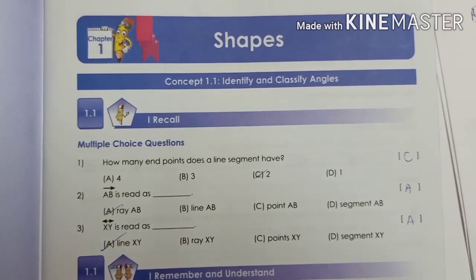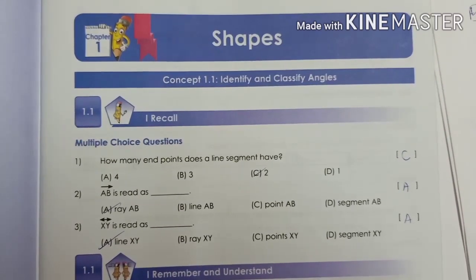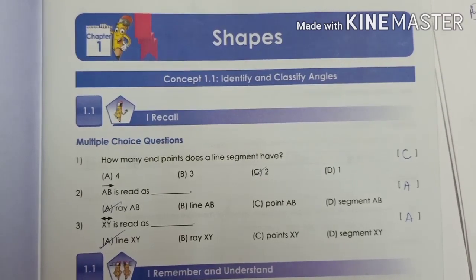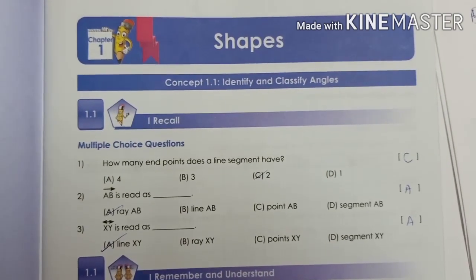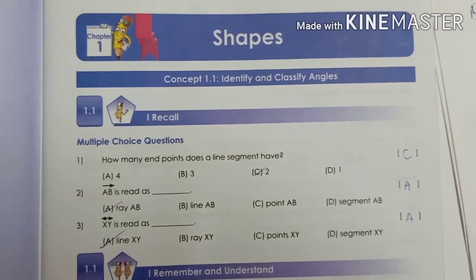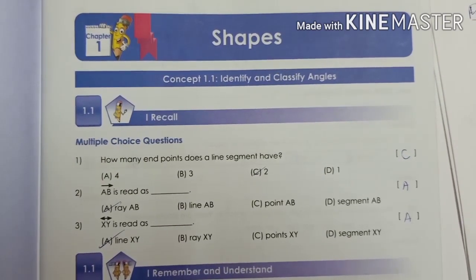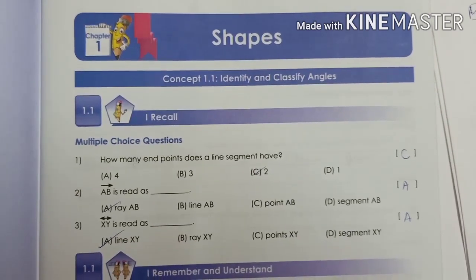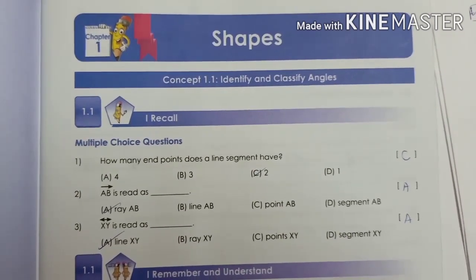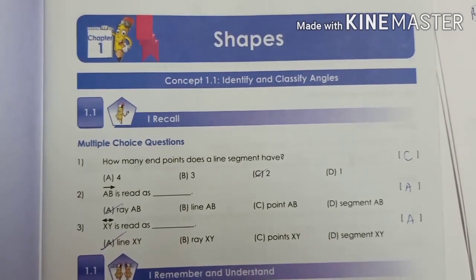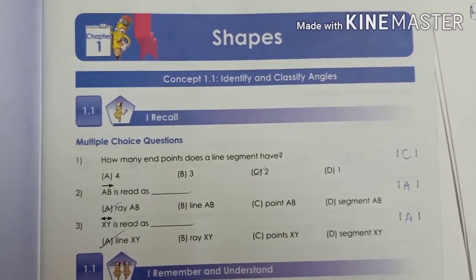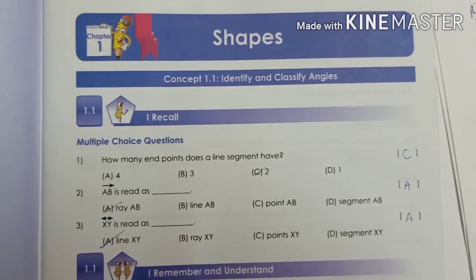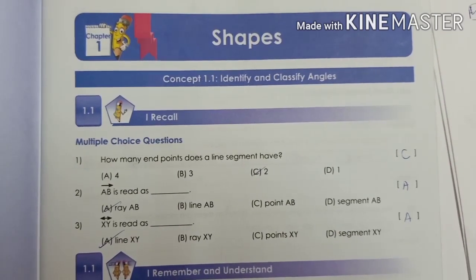The last question: XY is read as dash. Option A: line XY, Option B: ray XY, Option C: points XY, Option D: segment XY. Can you notice in the question that on XY, a line with two arrow marks is drawn? So it indicates a line. The right option is Option A, line XY.